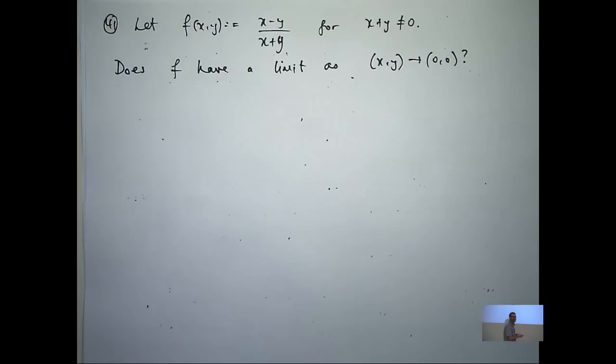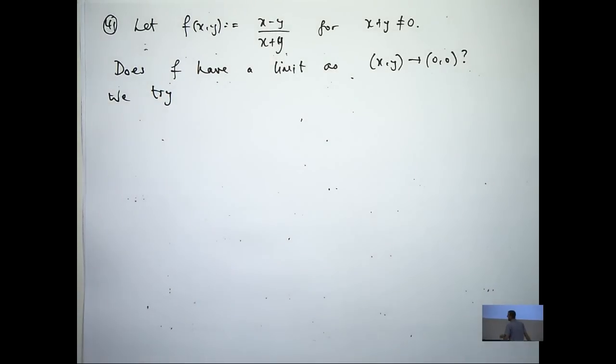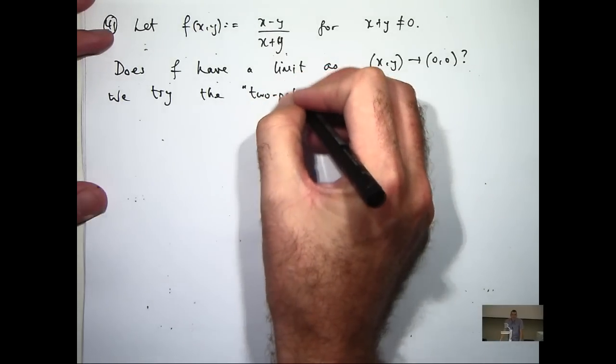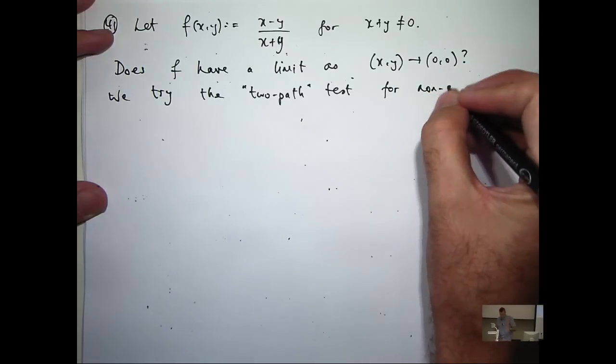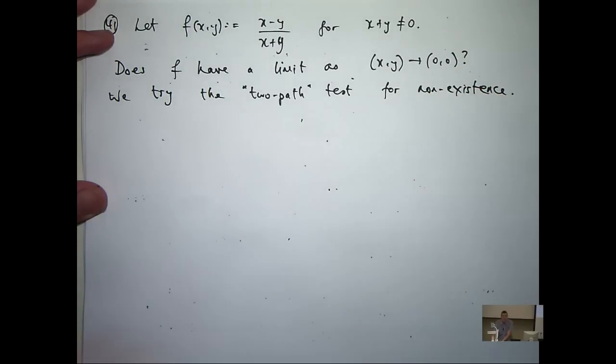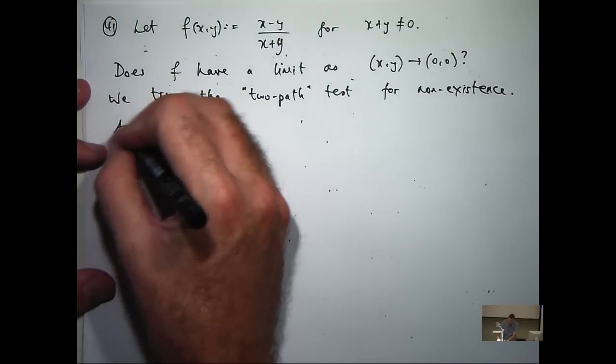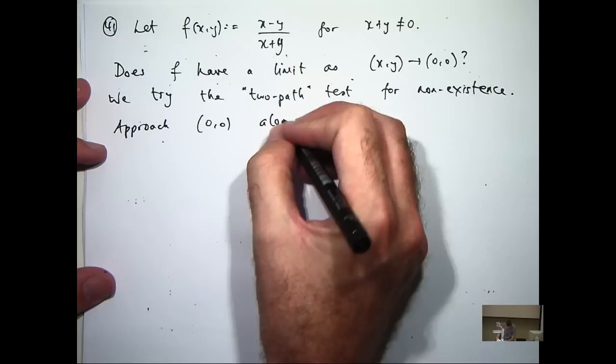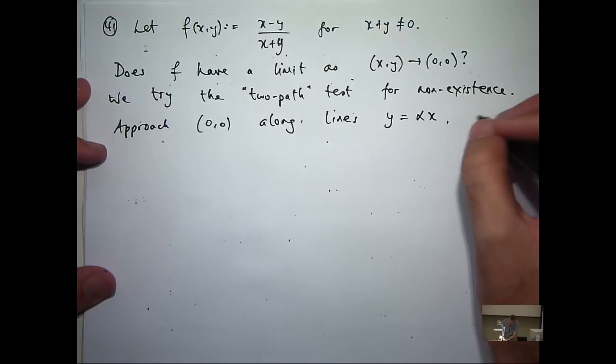Now to cover everything, I showed you a method in lectures using not just two different lines, but a whole bunch of different lines. So we're going to approach (0,0) along the lines y equals alpha x where alpha is just a non-zero constant.